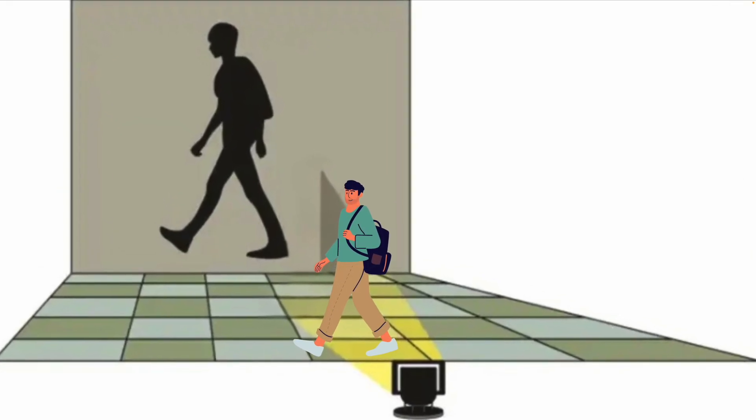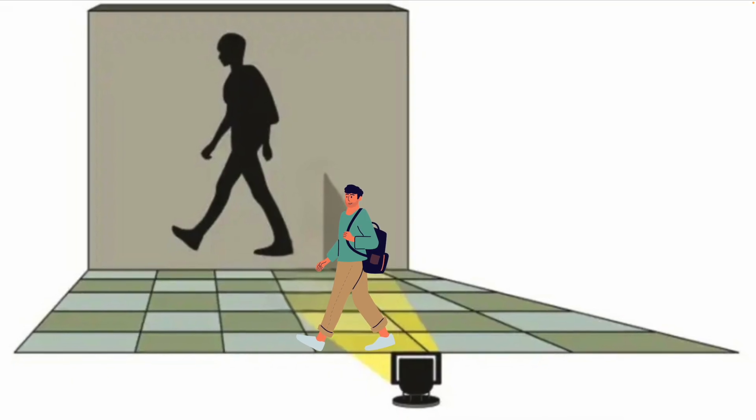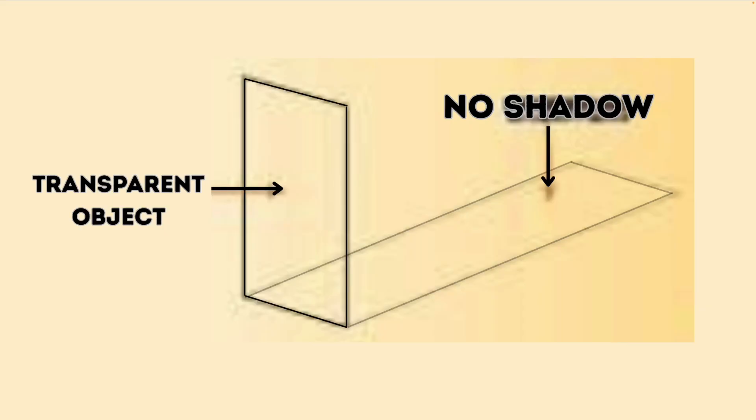Opaque objects like a body or a ball block all the light, that's why they form a dark shadow. Translucent objects like greaseproof paper let some light pass through, so they make a faint shadow. Transparent objects like clear glass let almost all the light through, so they make little to no shadow at all.